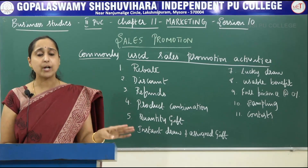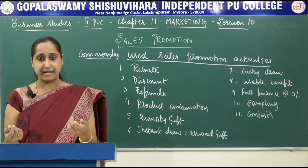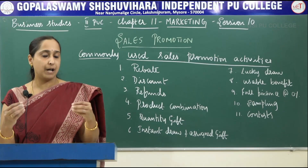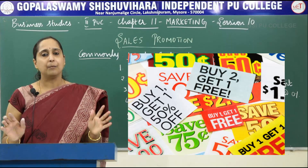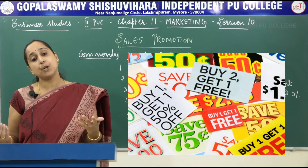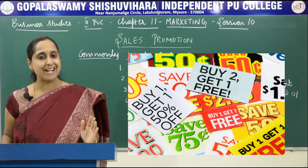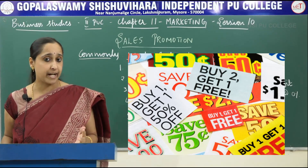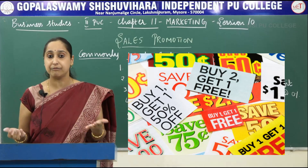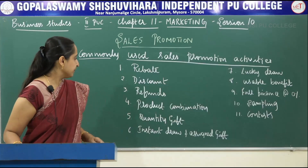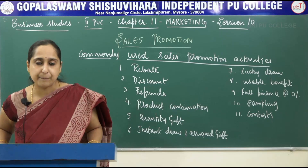Next is refund — refunding means paying back a part of the price paid by the customer with some proof, such as a bill or cash memo. Next is product combination — offering another product as a gift along with the purchase. For example, if you purchase one kg of atta (wheat), you may get half kg of sugar free, or buying a 25-inch TV may get you a vacuum cleaner free.